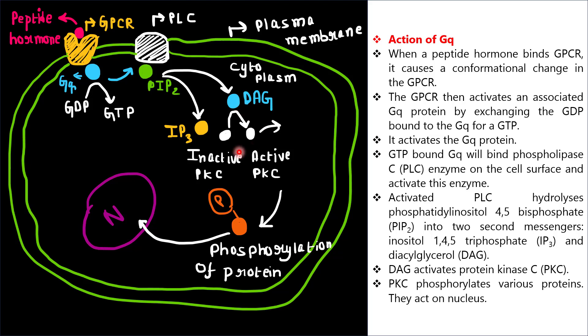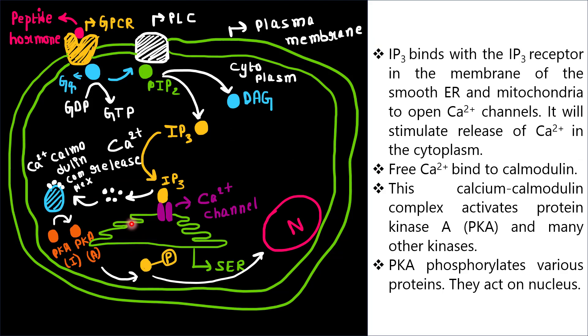DAG activates protein kinase C. Protein kinase C, or PKC, phosphorylates various proteins, and these proteins act on the nucleus. They enter the nucleus and help in the transcription of specific genes.